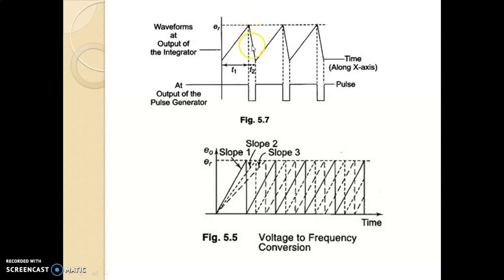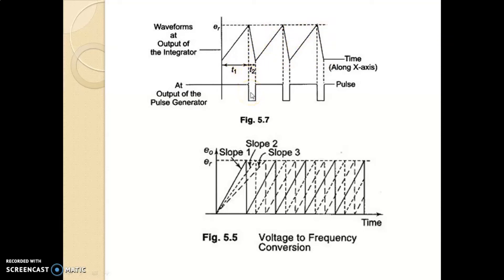This represents the discharging. The width of the pulses is always dependent on the time required for the capacitor to discharge. Time T1 represents the time required for the capacitor to charge, and time T2 represents the discharge period. As soon as the capacitor reaches zero, again the capacitor starts charging, and this procedure continuously goes on, producing pulses at a regular interval.